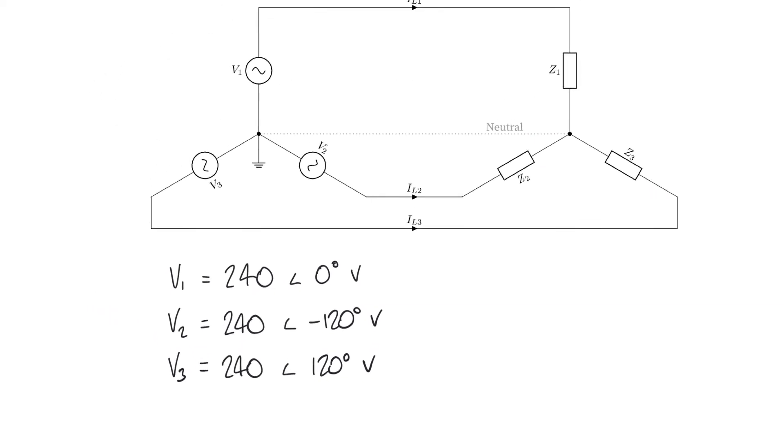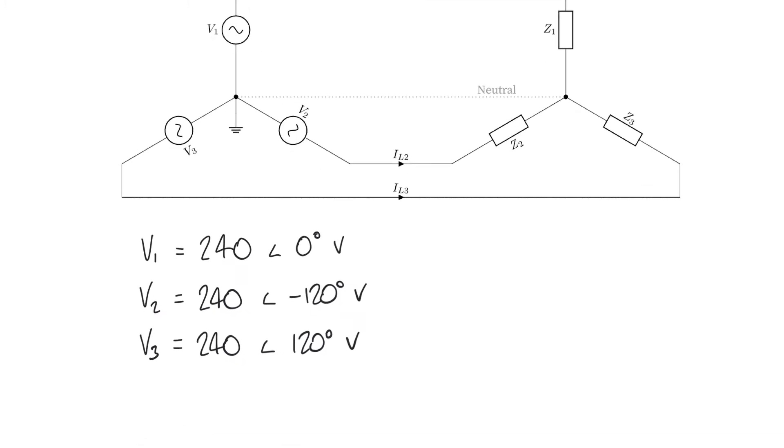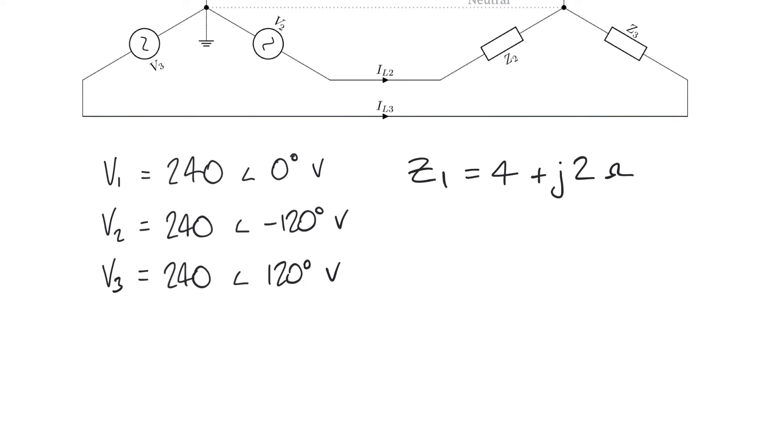But whereas last time Z1, Z2 and Z3, these star connected loads, were all equal in our balanced network, this time we'll say that Z1 is equal to 4 plus J2 ohms, Z2 is equal to 3 minus J3 ohms, and Z3 is equal to 5 plus J1 ohms.